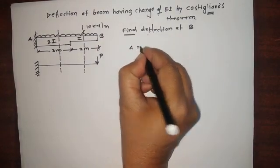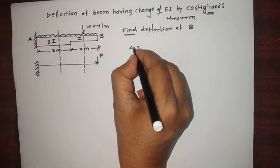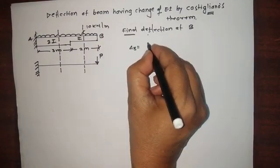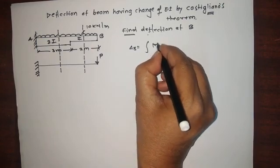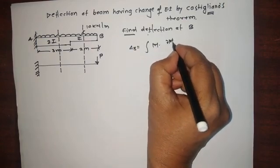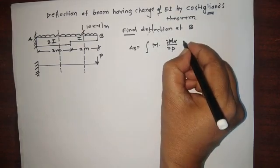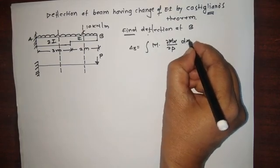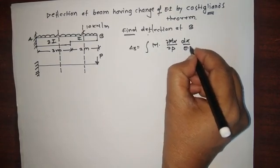The formula for deflection is: delta equals the integration of M(x) times del M(x) by del P, divided by EI, integrated over dx.